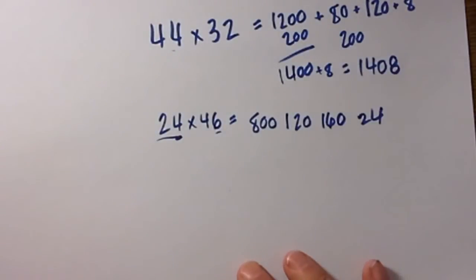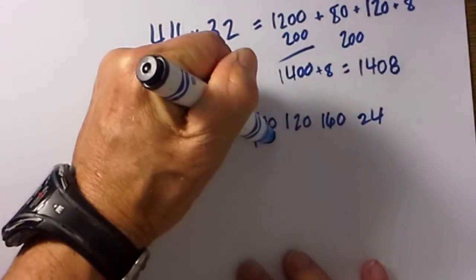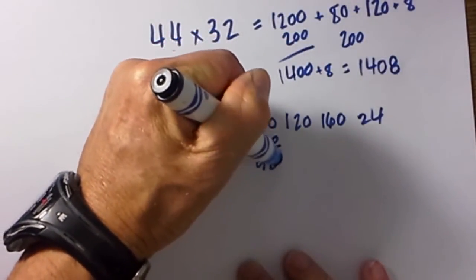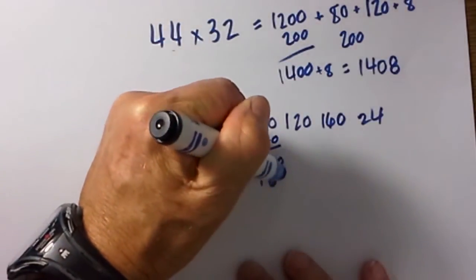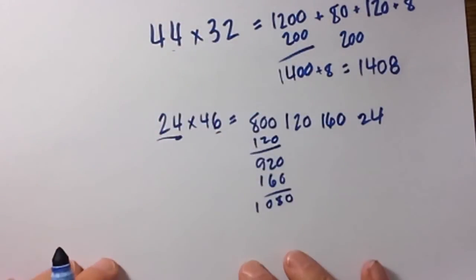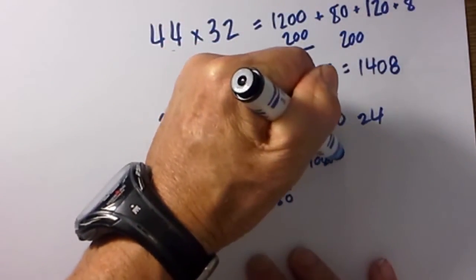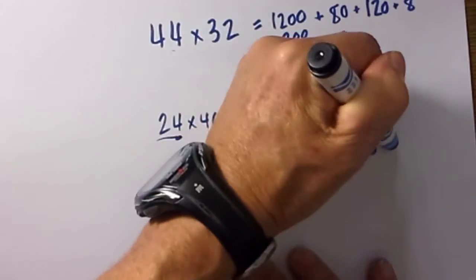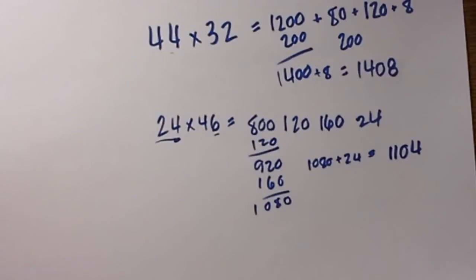Then we can easily add this together. We have 800 plus 120 is 920. Then 920 plus 160 will equal 1080. Then 1080 plus 24 will equal 1104. So again you will see the multiplication in an example like this is pretty easy.